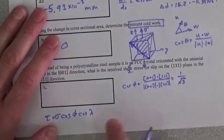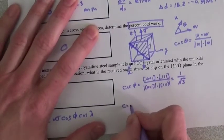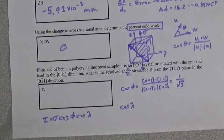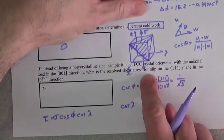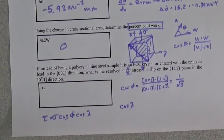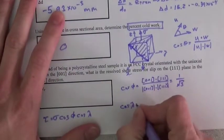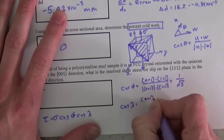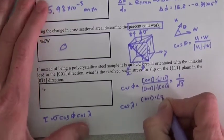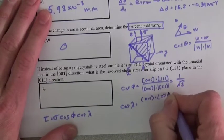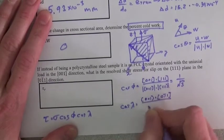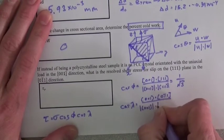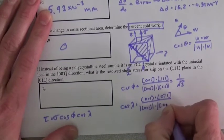Cosine λ is the dot product of [001] and the [01̄1] direction. So that's [001] dot [01̄1] divided by the magnitude of [001] times the magnitude of [01̄1]. So that gives us 1 divided by 1 times the square root of 2.